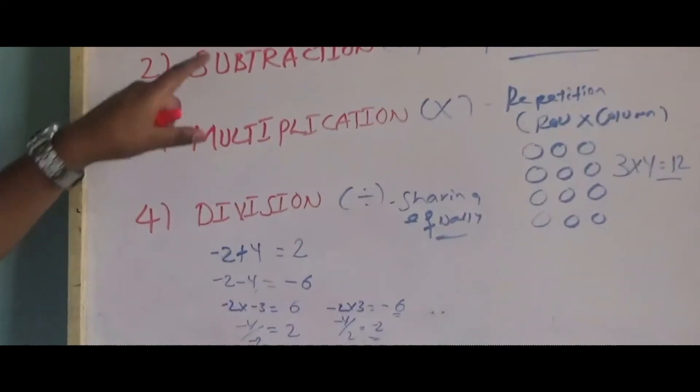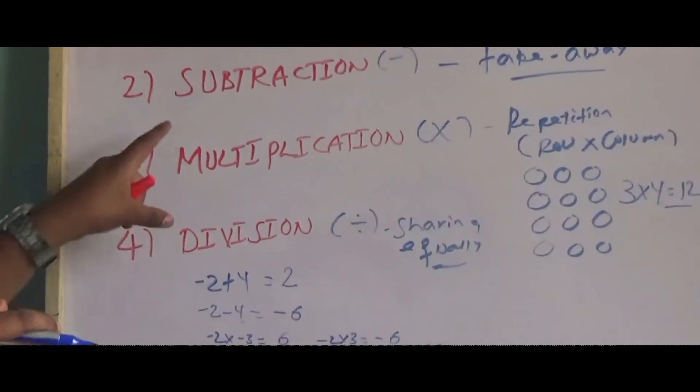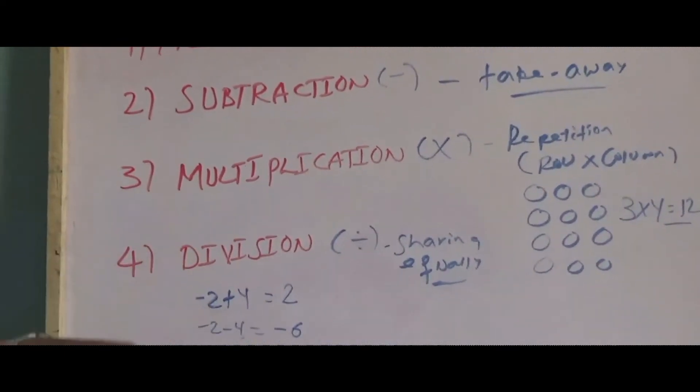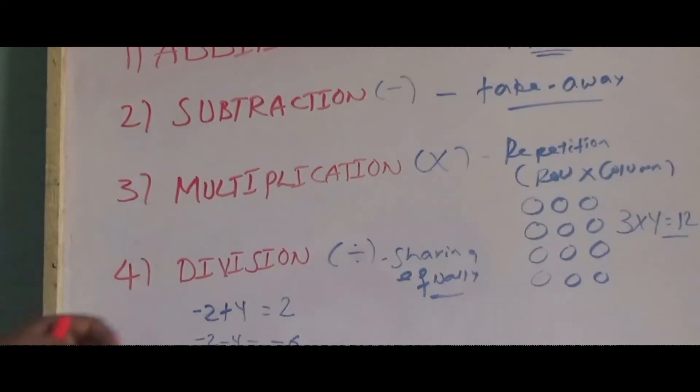Addition and subtraction are opposite to each other. Multiplication and division are opposite to each other.